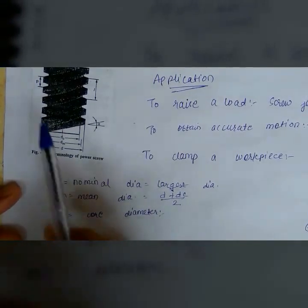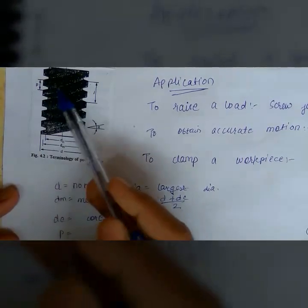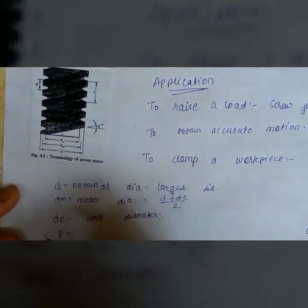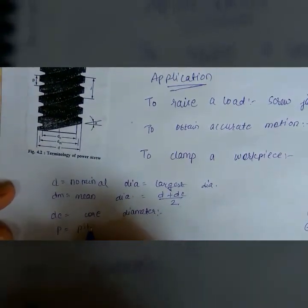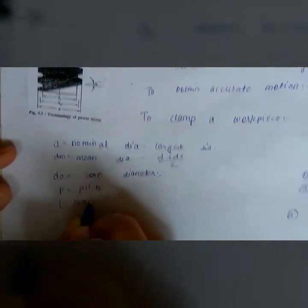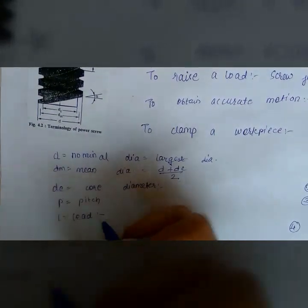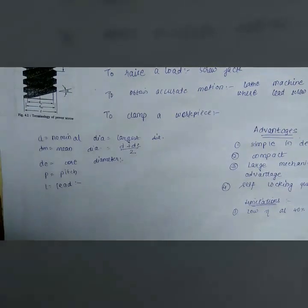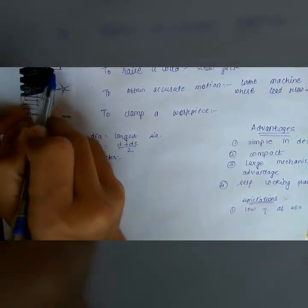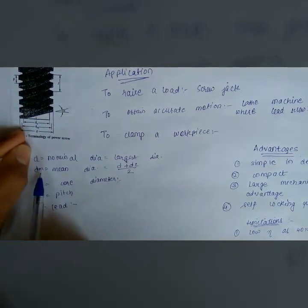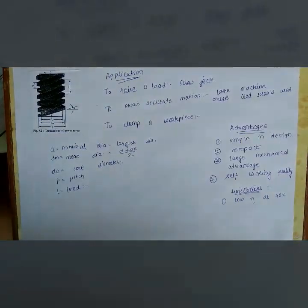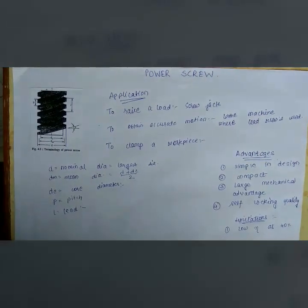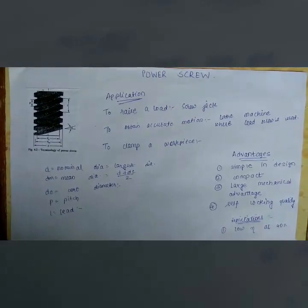Pitch is the axial distance between two points on corresponding teeth. 'L' is the lead — the distance measured parallel to the axis of the screw that the nut will advance in one revolution. Alpha (α) is the inclination angle measured from the horizontal for every tooth.